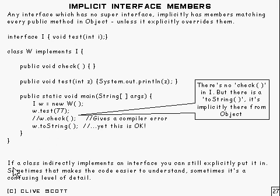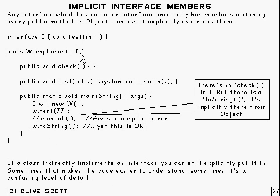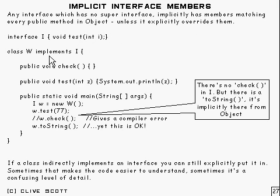Just one last thing to mention: if you've got a class that indirectly implements an interface, you can still put it in explicitly if you want to. It doesn't have any effect on the resulting code. So for example, if class W extended some other class, and that class implemented an interface, you could put that interface down in there explicitly — you wouldn't have to modify any of this. Sometimes that's useful, because if you're trying to work out whether some class implements an interface, it can be awkward if you've got to look at that class, look at what it extends, go to the class that it extends, check if that implements the interface, and so on all the way up. That can be a bit tedious, so sometimes it's better if you just put it in.